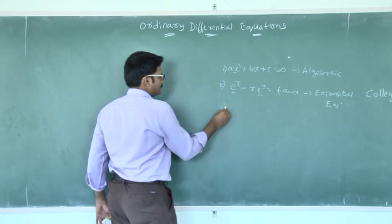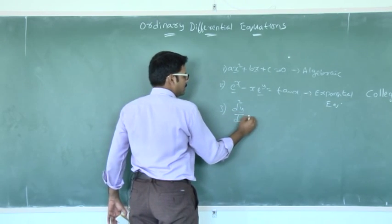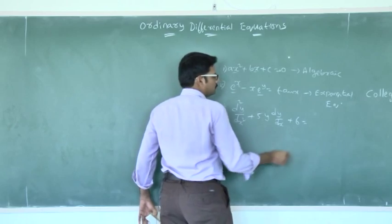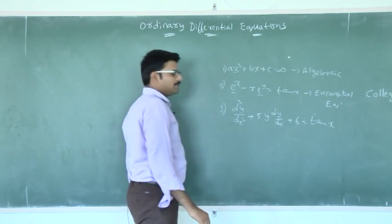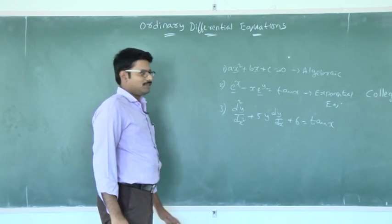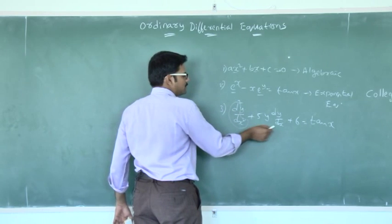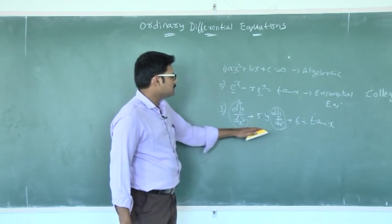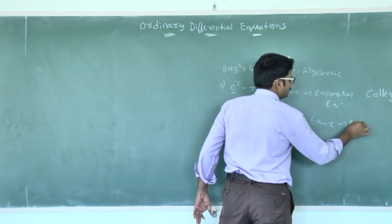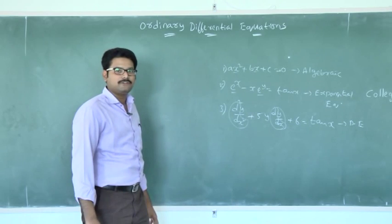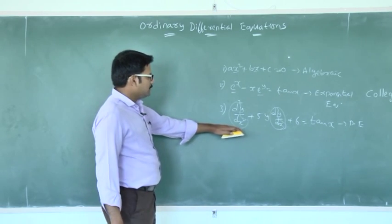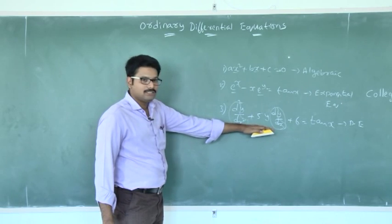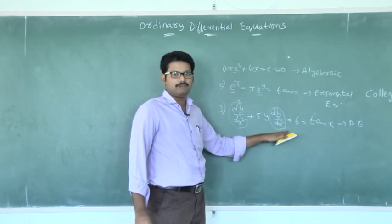Similarly, if you take an example: d²y/dx² + 5y·(dy/dx) + 6 = tan x. If you take this equation, here we are calling it as a differential equation. Why? Because this equation is having differential coefficients, dy/dx and d²y/dx² like this. So an equation which involves the differential terms, that equation is known as a differential equation, simply represented as DE. By seeing an equation, we can identify it as a differential equation with the help of these terms: dy/dx, d²y/dx², and so on.